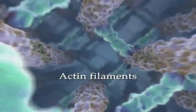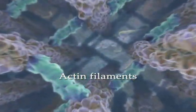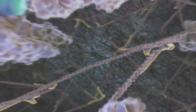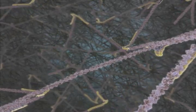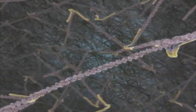Inside microvilli, actin filaments form tight parallel bundles, which are stabilized by cross-linking proteins. While deeper in the cytosol, the actin network adopts a gel-like structure, stabilized by a variety of actin-binding proteins.